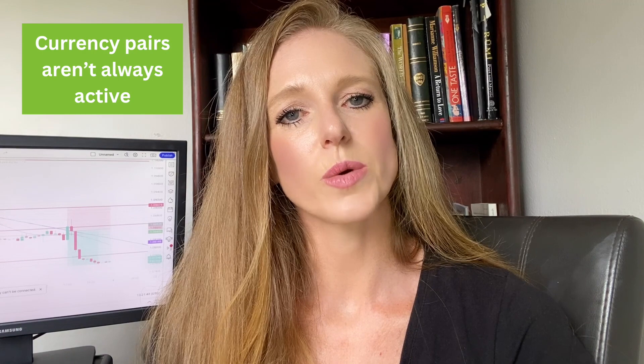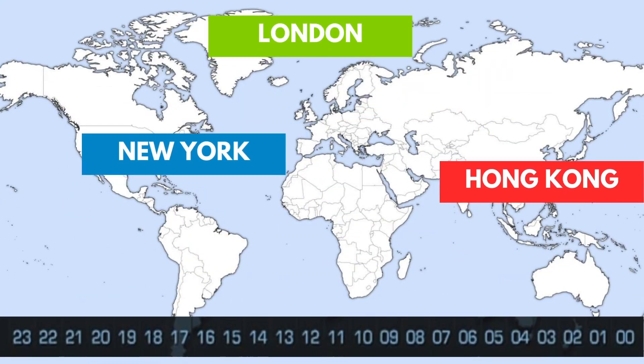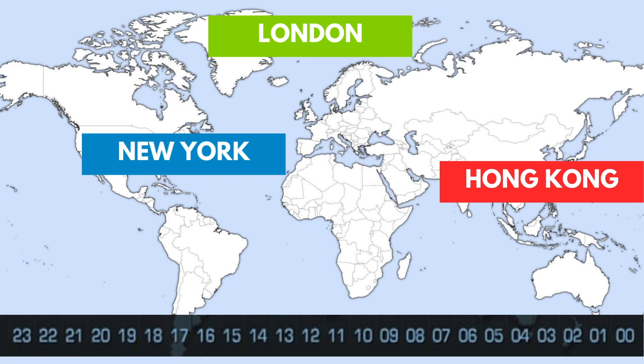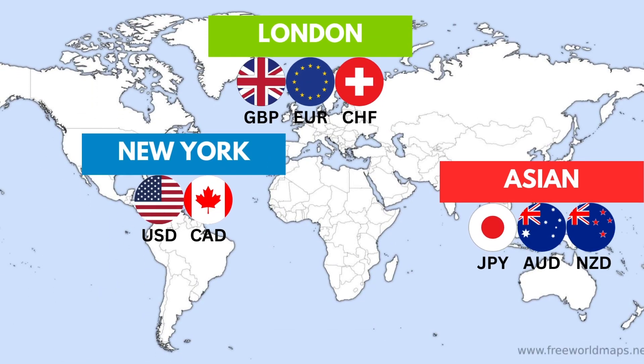One thing you have to be aware of when choosing more pairs is that currency pairs do not always see the same levels of activity at all times. For example, you'll find that the markets are more active during the New York, London, and Hong Kong sessions, and particularly during the crossovers of these sessions. You also want to choose a pair that's active during your trading hours. For example, if you are in a European time zone, then choosing a pair like the EURUSD, which will be active during the London and New York session, will provide more trading opportunities.